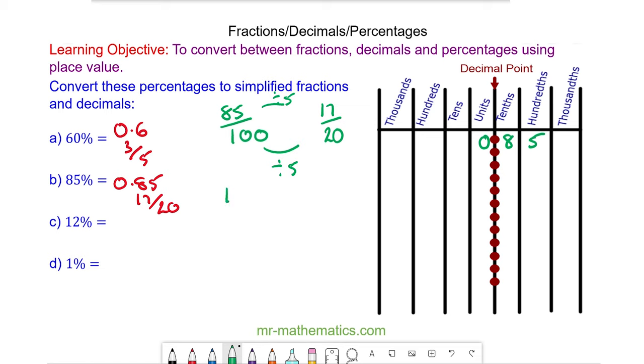For question c, 12%, we know is 12/100, which is 0 units, 1 tenth and 2 hundredths, so 0.12. And we can simplify the fraction by dividing both by 2, so we have 6/50. We can divide by 2 again, so we have 3/25.